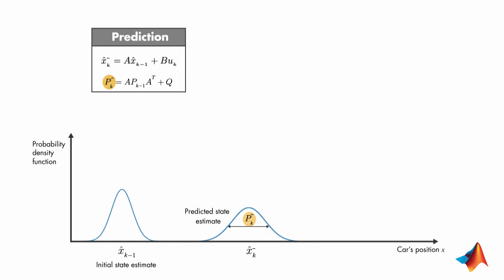This variance comes from the process noise and propagation of the uncertain x hat k-1. At the very start of the algorithm, the k-1 values for x hat and P come from their initial estimates.